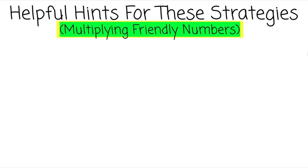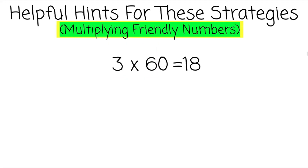We'll review multiplying friendly numbers first. 3 times 60 — this can be thought of as 3 times 6, which is 18. Then you can add this zero to your product.